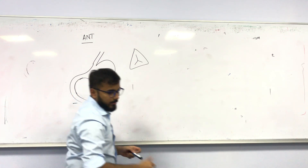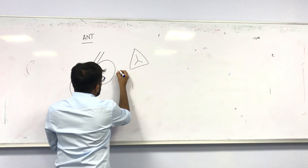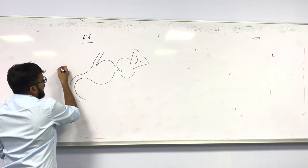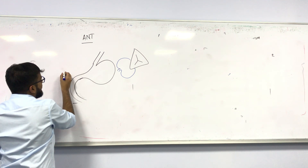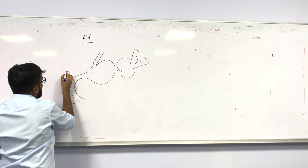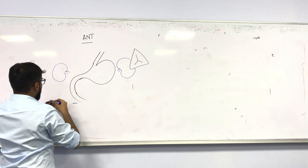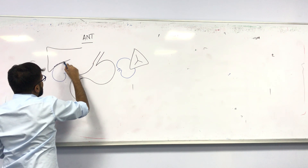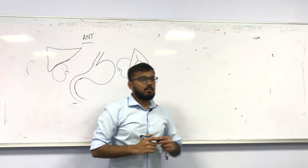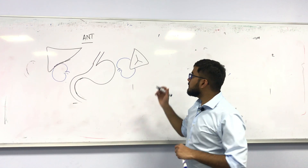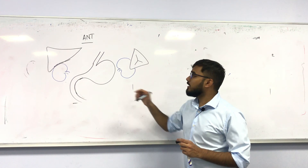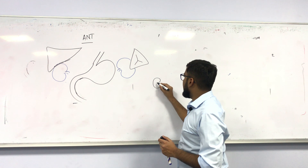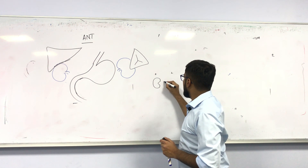Let me draw the kidneys in another color. Here you have the left kidney and the right kidney. The right kidney is positioned lower — why? Because of the presence of the liver. So how much lower is the right kidney compared to the left?